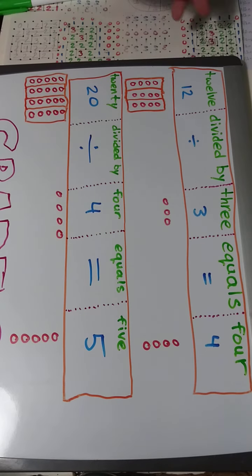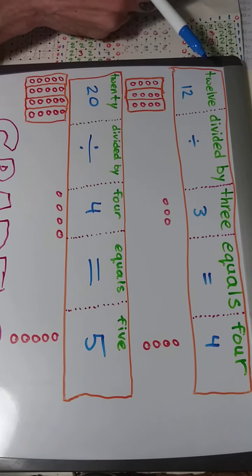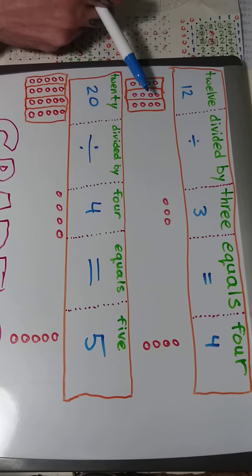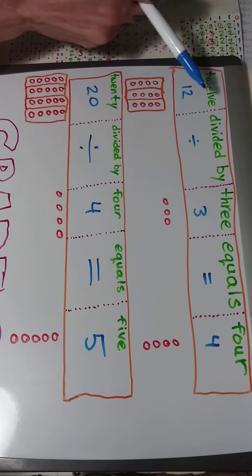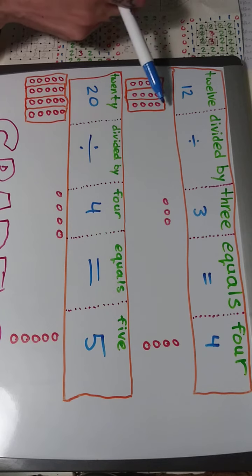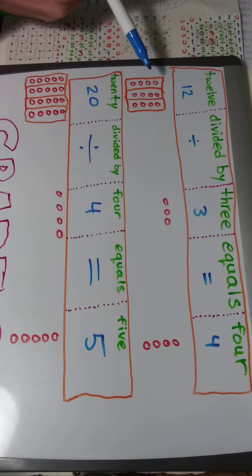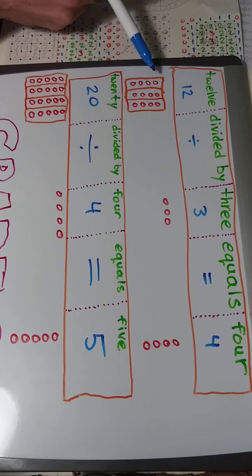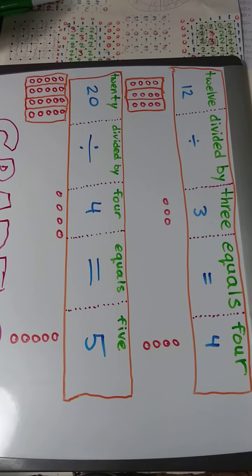Once again, up here we've taken 12: 1, 2, 3, 4, 5, 6, 7, 8, 9, 10, 11, 12. And we've divided it by 3 by circling it with 3 boxes. And that should equal 4. How many do we have in each box? 1, 2, 3, 4.